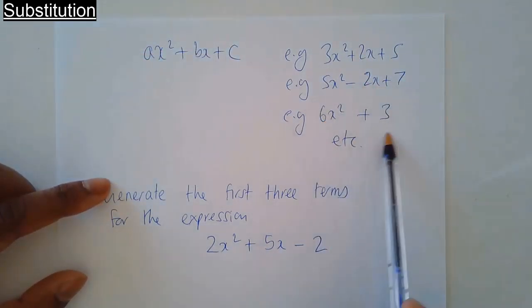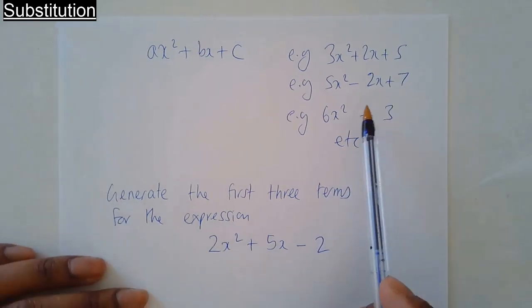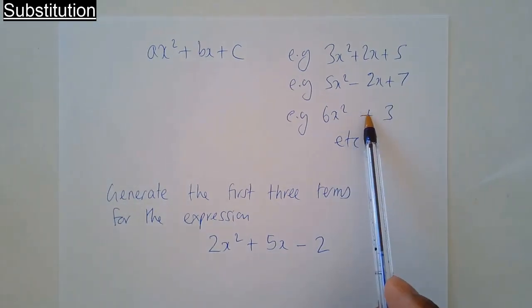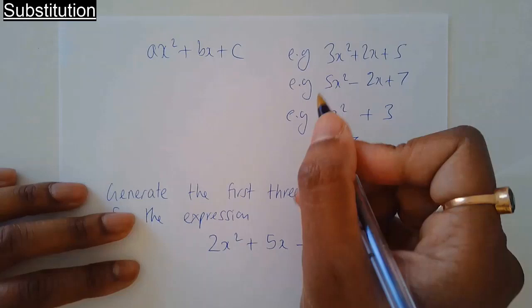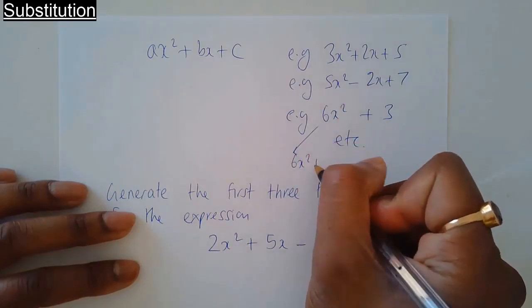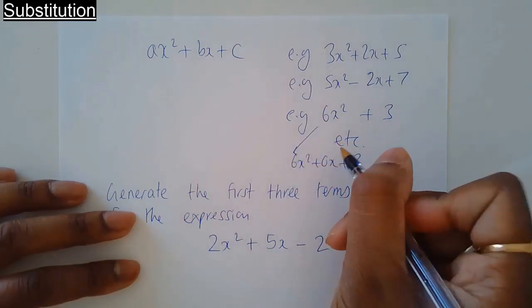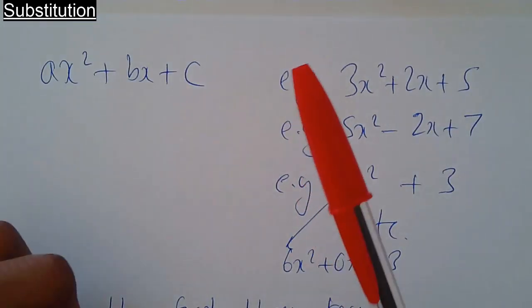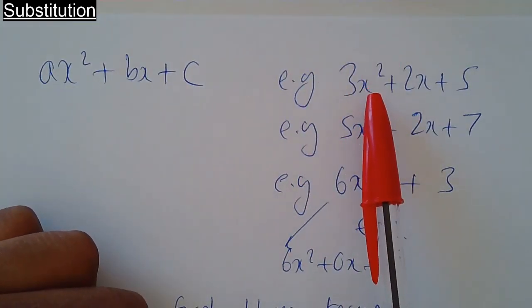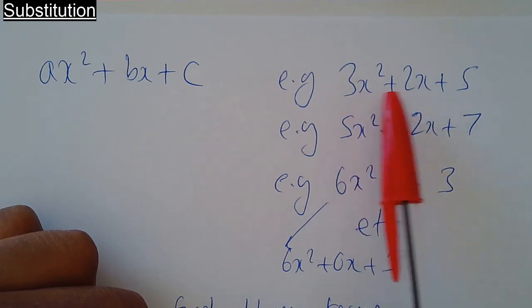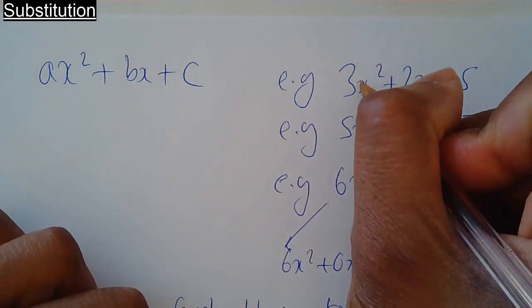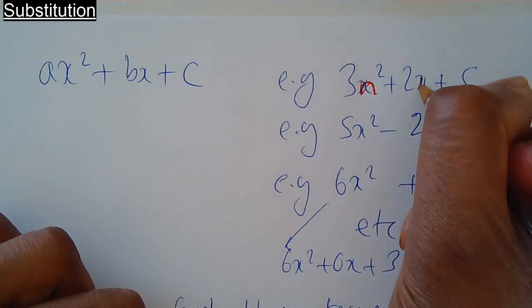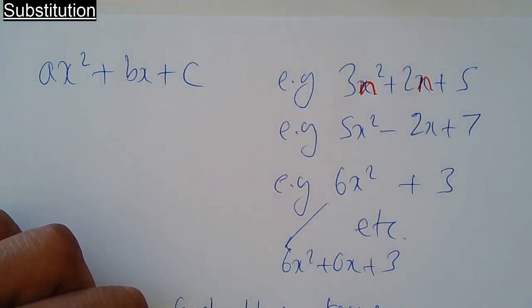This one, you're probably thinking, where is the x term? Well, the x term is zero x, so that could be written as 6x² + 0x + 3. We tend not to write 0x. It's not absolutely necessary to have the letter x—it could be any letter. So you could have, for example, instead of x, 3n² + 2n + 5.